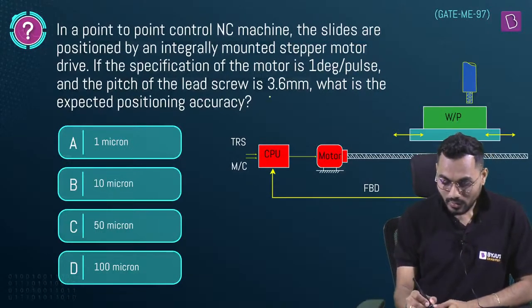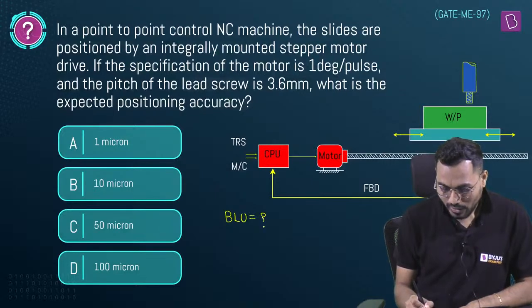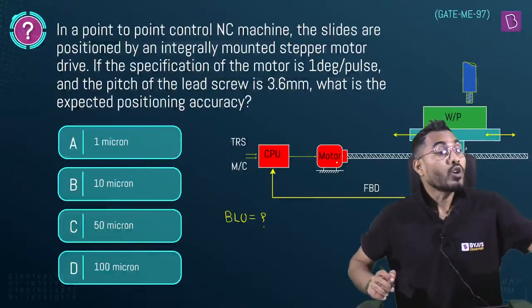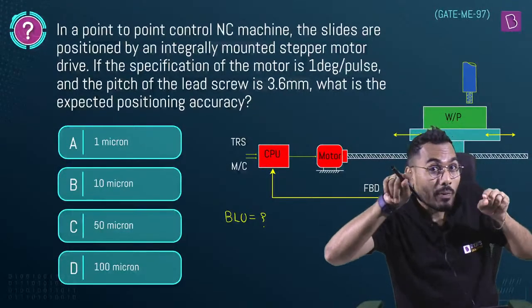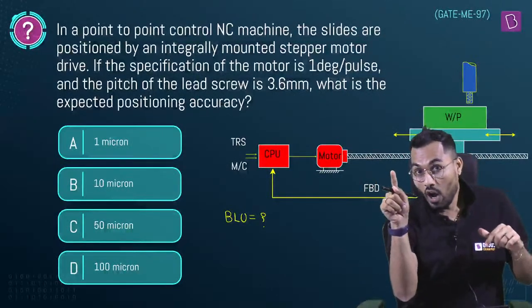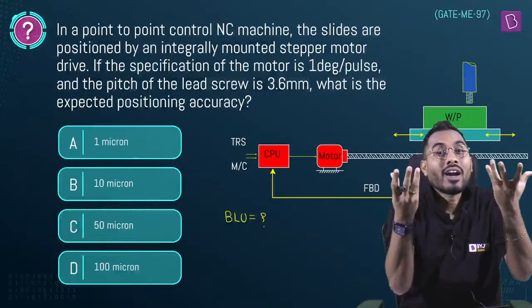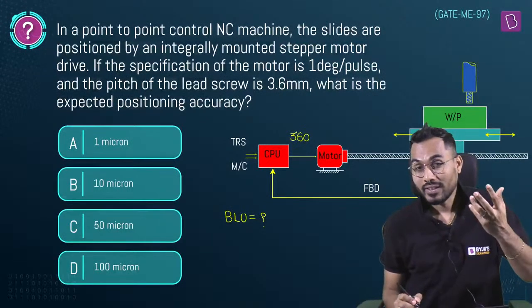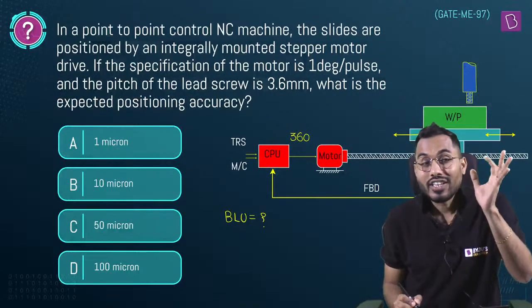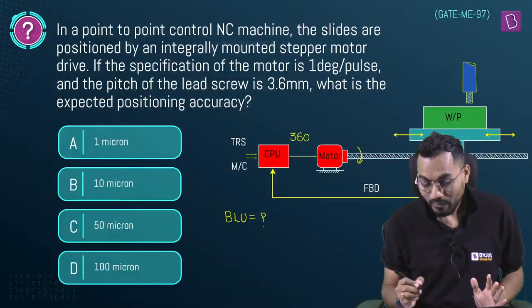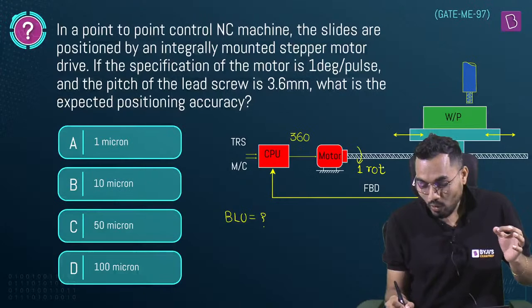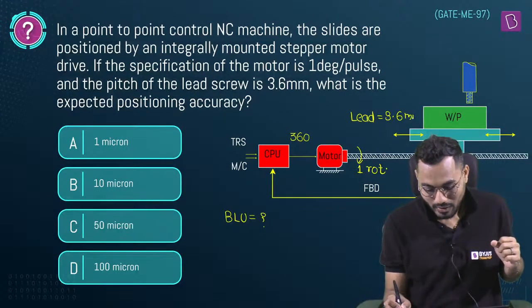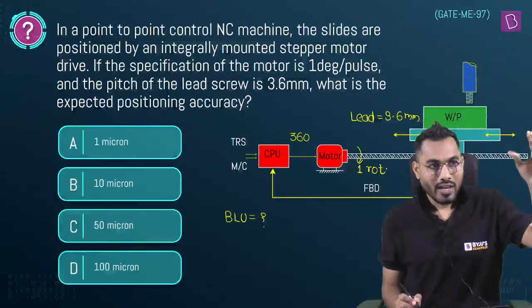To calculate BLU: for one complete rotation (360 degrees), 360 pulses are needed (1 pulse = 1 degree). In one complete rotation, the work table travels a lead distance of 3.6 mm. So 360 pulses → 3.6 mm travel.